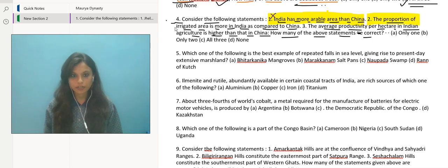That is, the proportion of irrigated area is more in India as compared to China. The proportion of irrigated area is obviously more in India as compared to China, and hence the statement is correct. I'm putting a tick over here, the statement is correct.